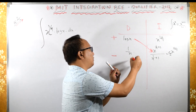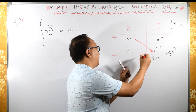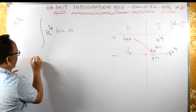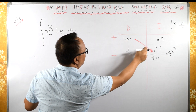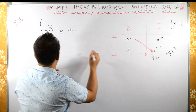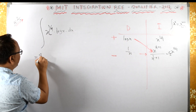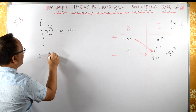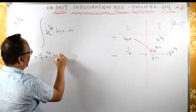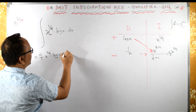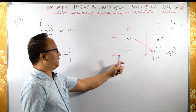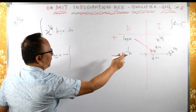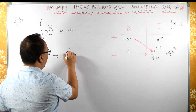We multiply across the diagonal: the first term is 4/5 x raised to 5/4 into log of x. Then with the minus sign, we need to integrate the product of the next row.